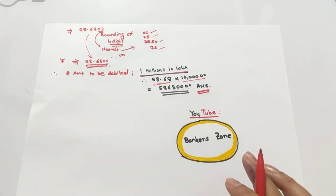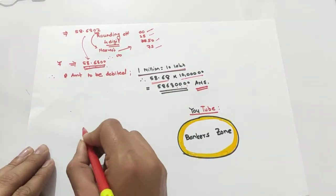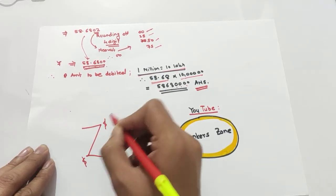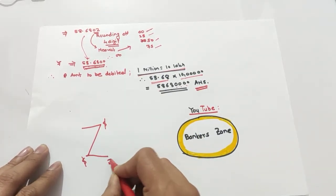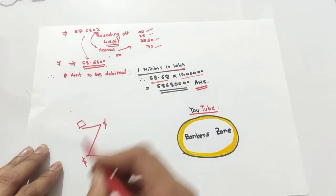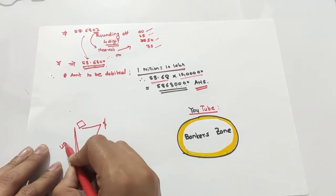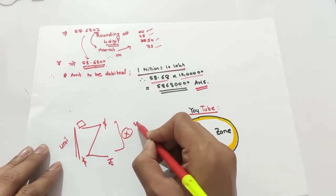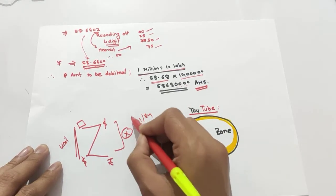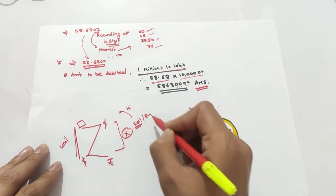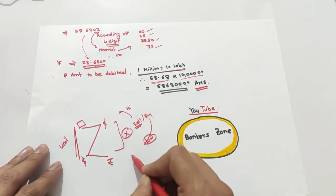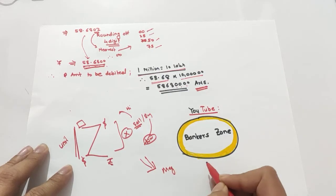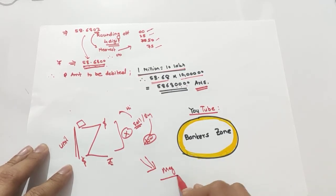These are simple examples worth two to three marks. To summarize the Z method: draw a Z, place the common currency on the vertical line, home currency (rupees) at the bottom, and the third currency at the top. Make the left side unity. Multiply the right side. If selling, take the high value; if buying, take the low value. Add or subtract the margin as applicable.